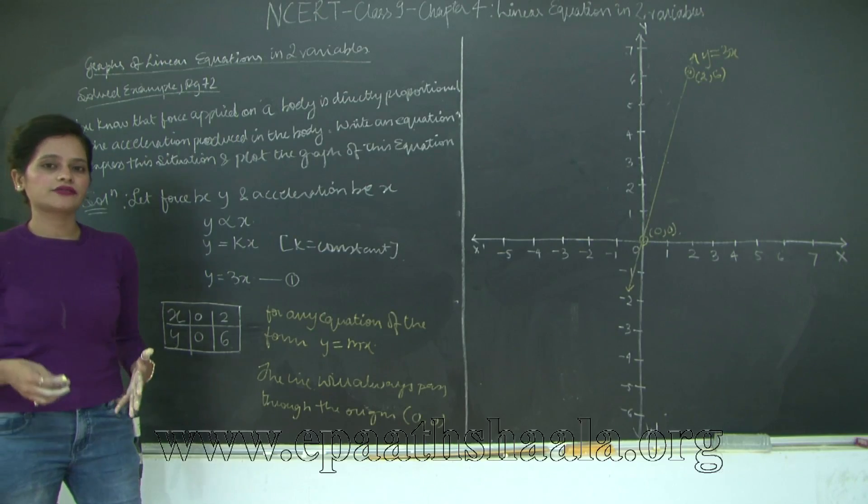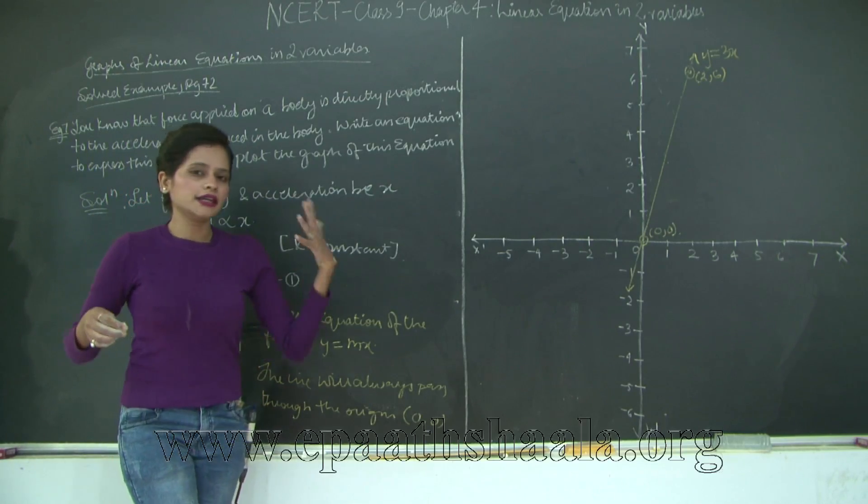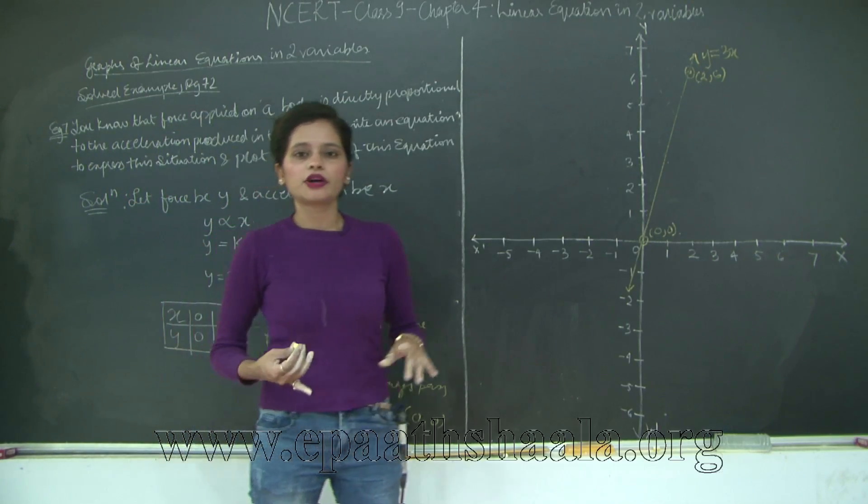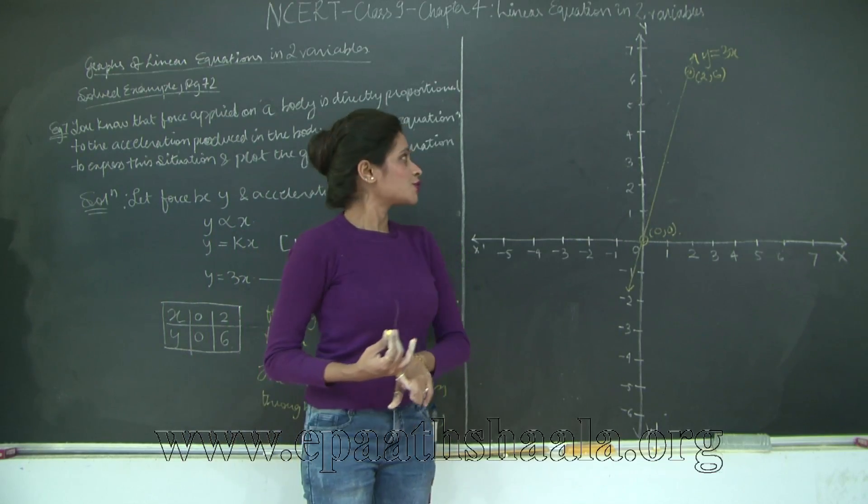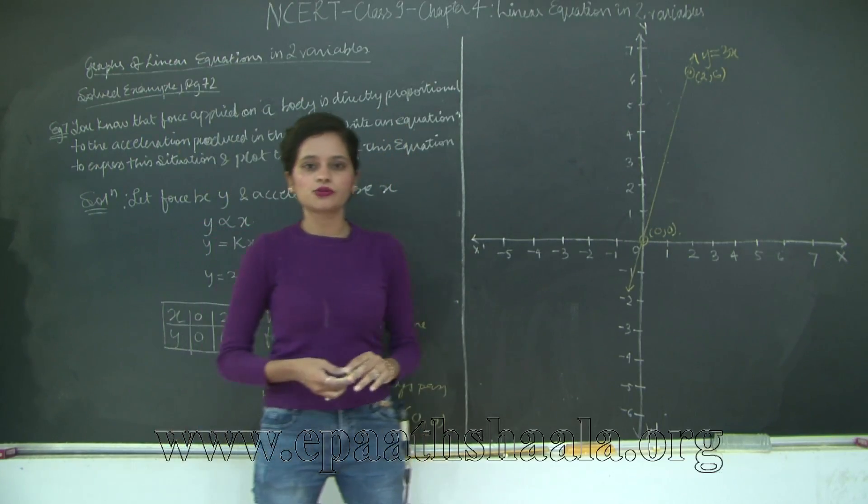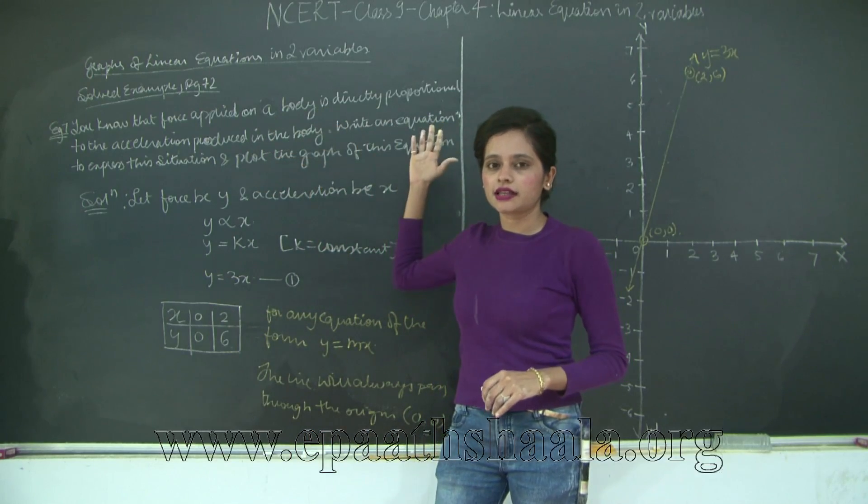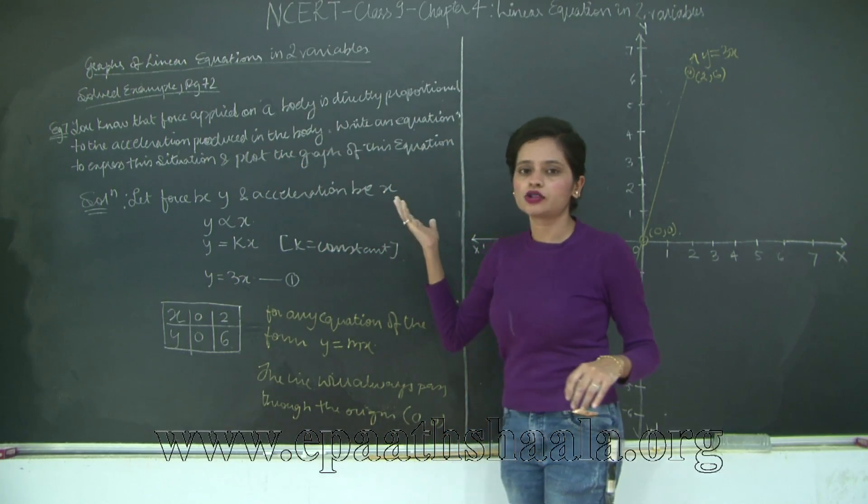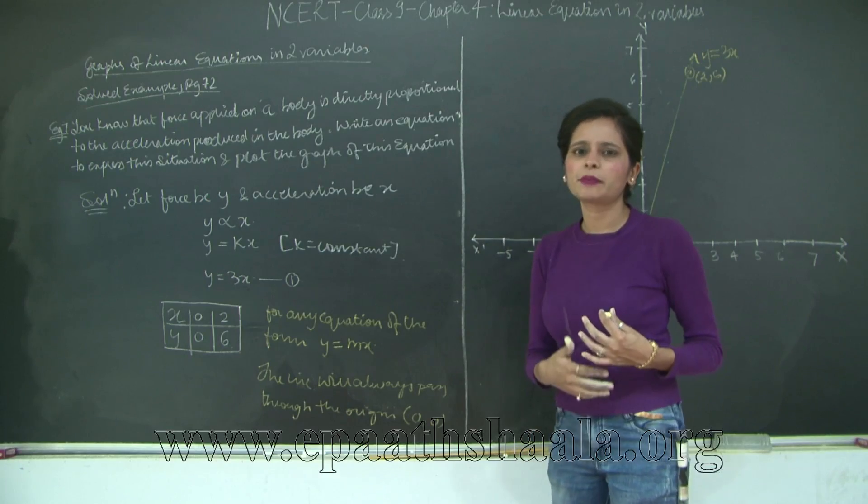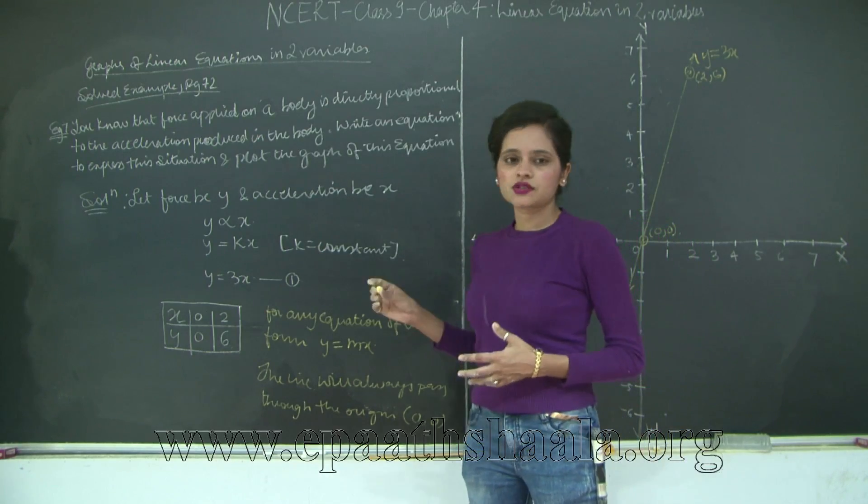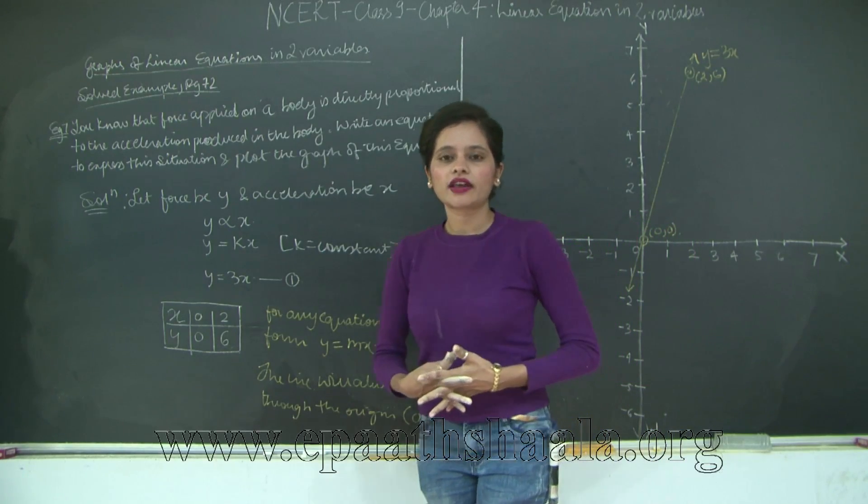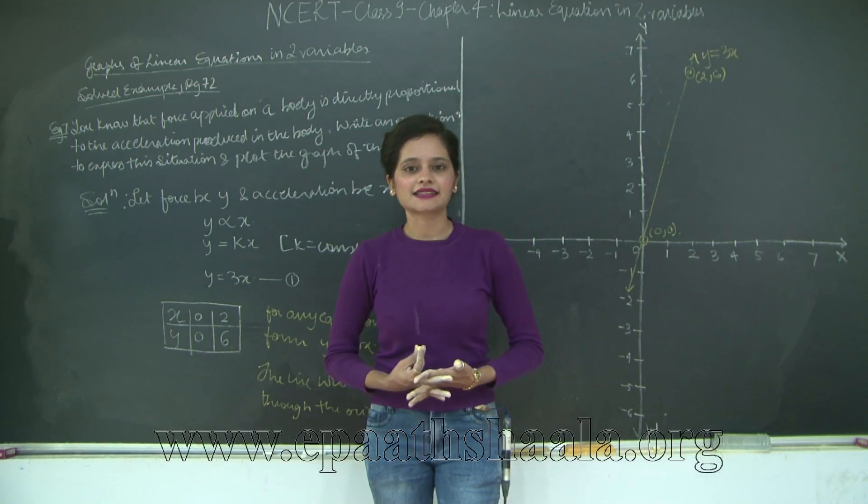It could be a positive constant, negative constant or any real number - integer, whole number, natural number. So with this we have learnt how to plot equations for any expression that is given in the form of force is equal to mass into acceleration. You may get many such questions. So this was just one of the examples. Let's take a look at the remaining solved examples in the next class. Thank you.